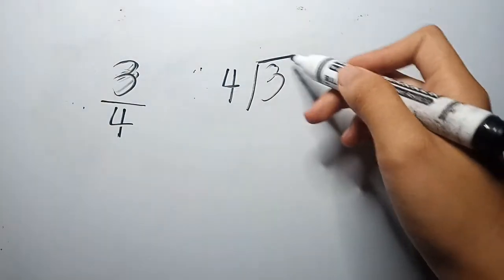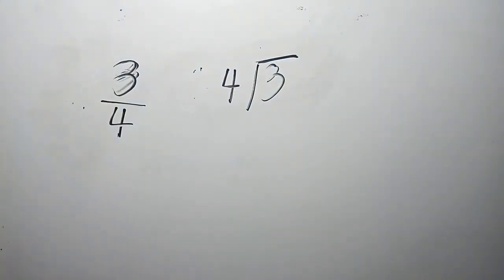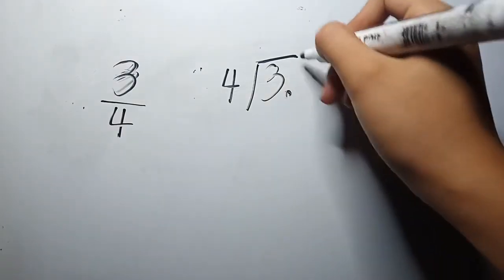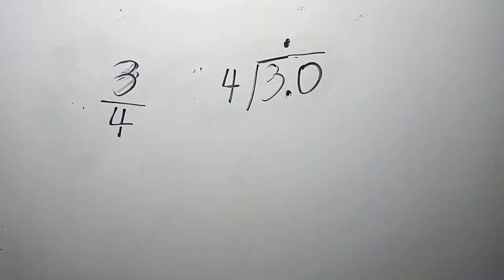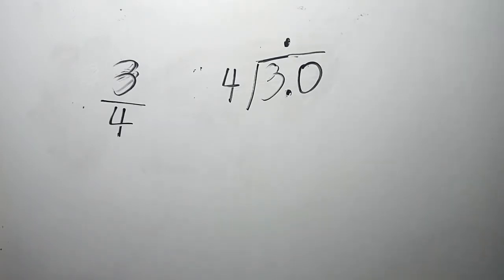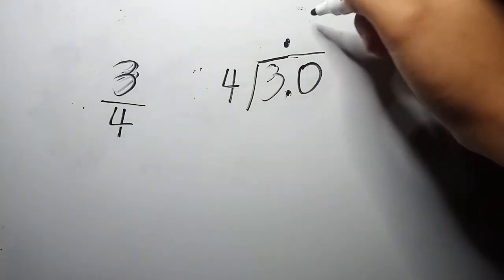As you can see, our dividend — the number inside the division — is less than our divisor. So we have to make our dividend greater than the divisor to be able to divide these numbers. We will just add a decimal point here and a zero. Now we already have 30 as our dividend and 4 as our divisor, so we can already divide. 30 divided by 4: how many 4s are there in 30? There are 7 fours in 30, so 30 divided by 4 is equal to 7.